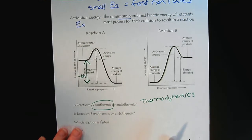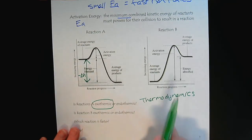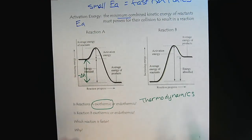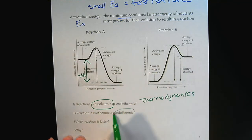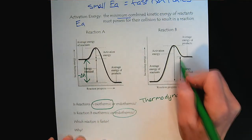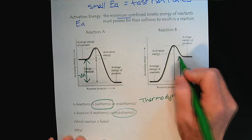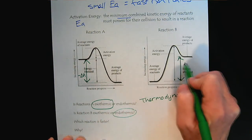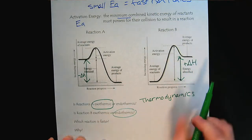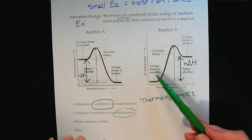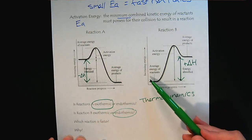If we look at reaction B, we see the opposite shape, and so we can identify it as the opposite — endothermic. Here, energy must be absorbed, so we put a positive delta H because the products are higher in energy than the reactants.